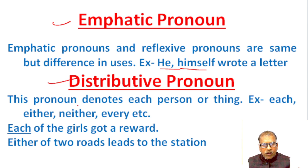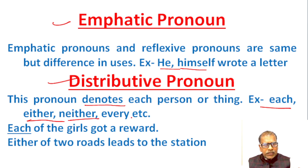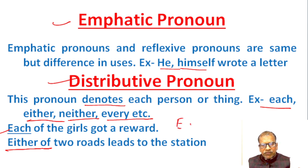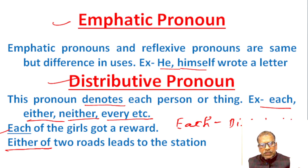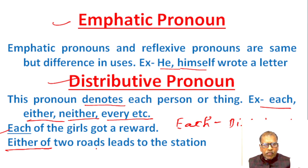Distributive pronoun. This pronoun denotes each person or thing. Examples: each, either, neither, every. In the sentence 'Each of the girls got a reward,' 'each' is a distributive pronoun. Each always takes a singular number noun and verb. Similarly, in 'Either of two roads leads to the station,' 'either' is a distributive pronoun and the verb should be singular, agreeing with the last subject.